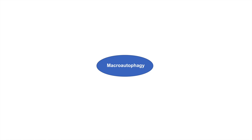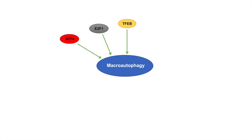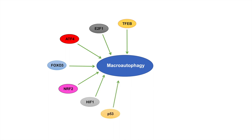As a brief overview of this lesson, one of the transcription factors we'll talk about is TFEB, a master regulator of lysosomal biogenesis and autophagy function. We're also going to talk about E2F1, ATF4, FOXO3, NRF2, HIF1, P53, and PPAR-alpha — all transcriptional activators of macroautophagy.